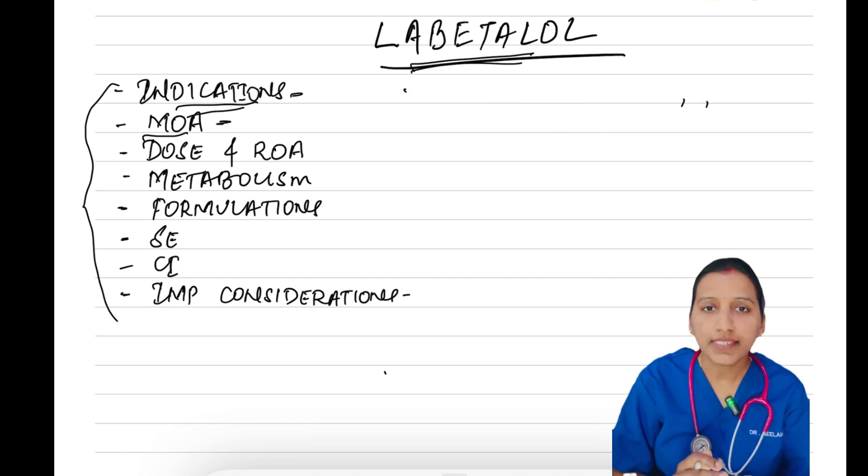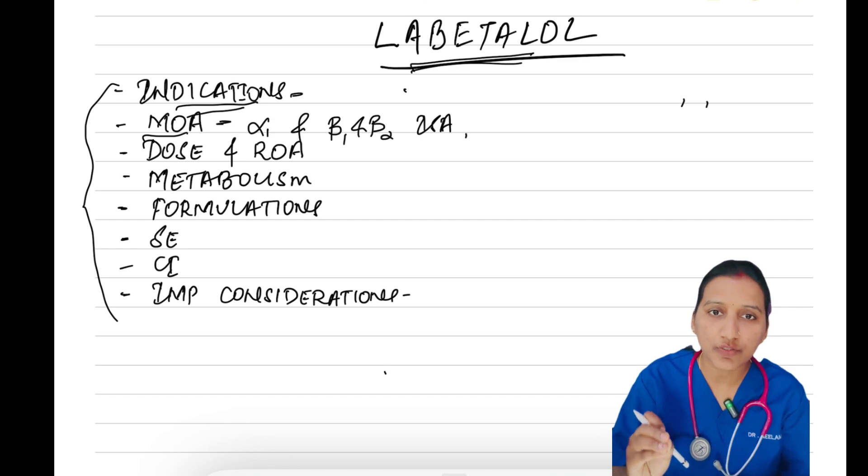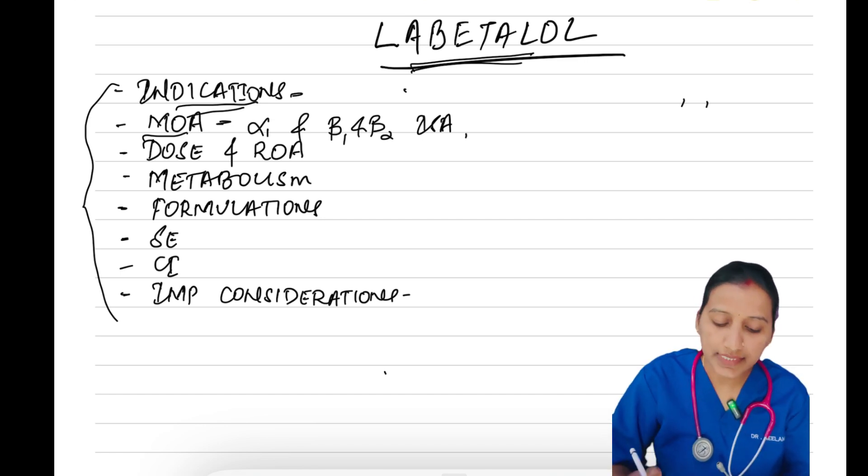Next, mechanism of action. It contains both alpha-1 adrenergic antagonism and beta-1 and beta-2 blocking activity. It also has intrinsic sympathomimetic activity. Labetalol's action results in decreased peripheral vascular resistance without significant alteration in heart rate and cardiac output. It has equal beta-1 and beta-2 blocking action.